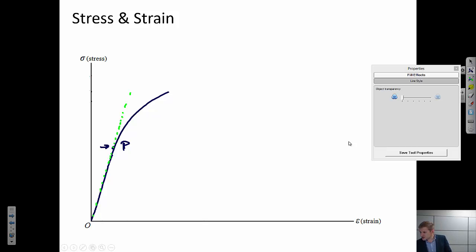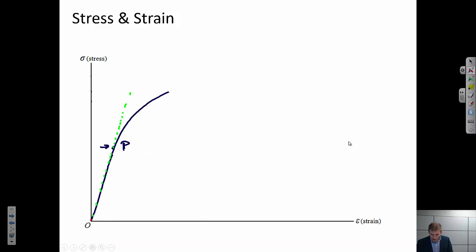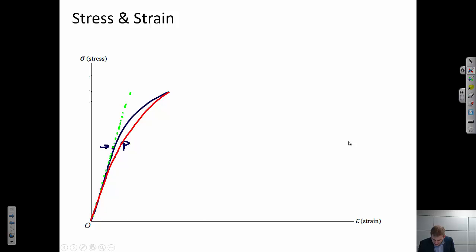Often it's very difficult to pinpoint one distinctive stress at which the proportional limit occurs. Let me draw a second line in a different color. If I draw a line that looks more like this, it's very difficult to say exactly where I deviated from linearity — was it here, or here?